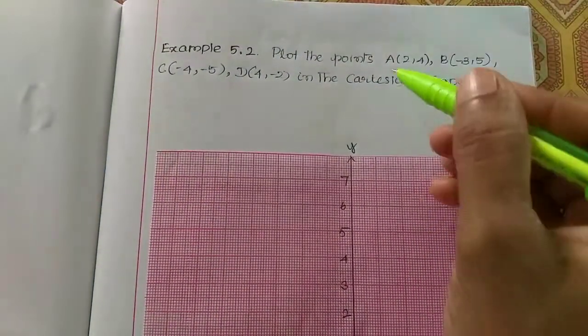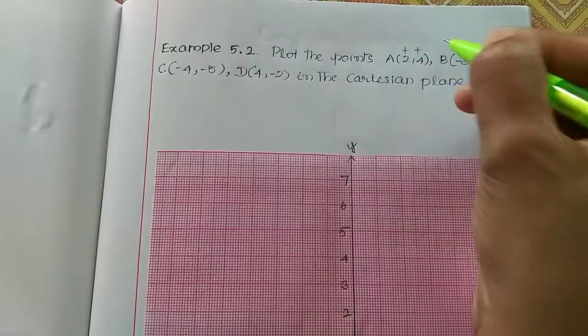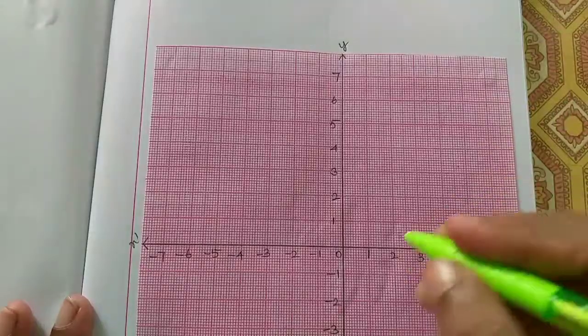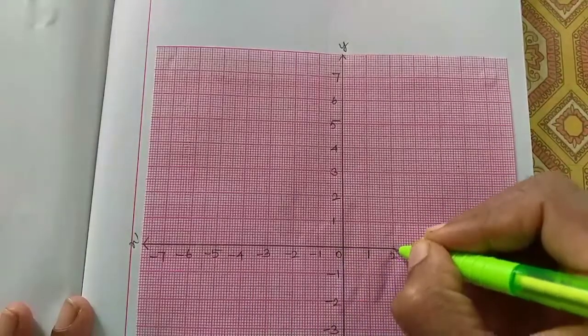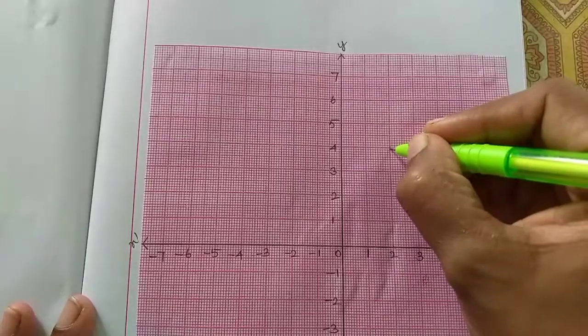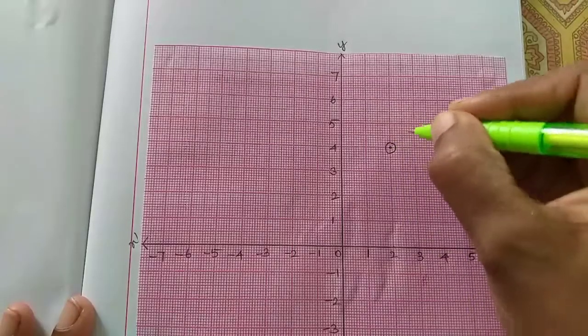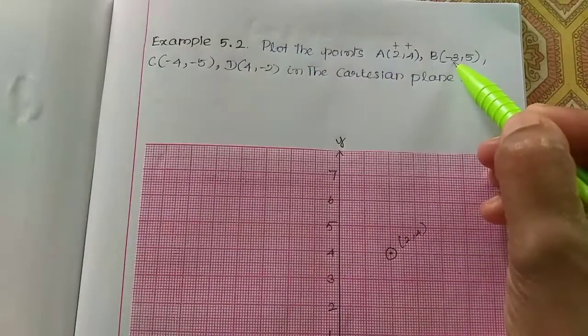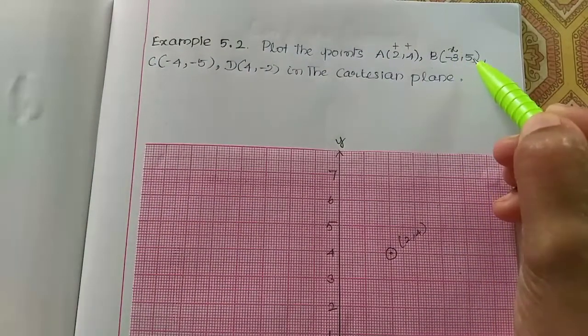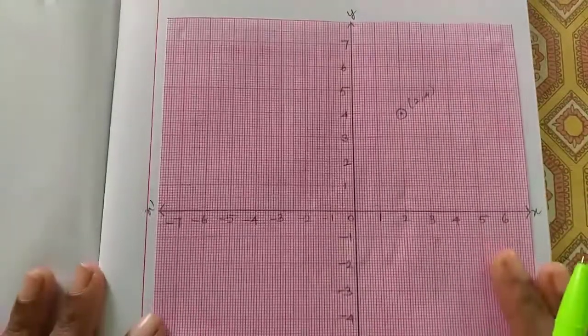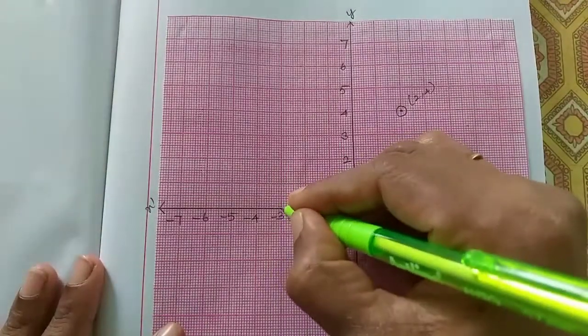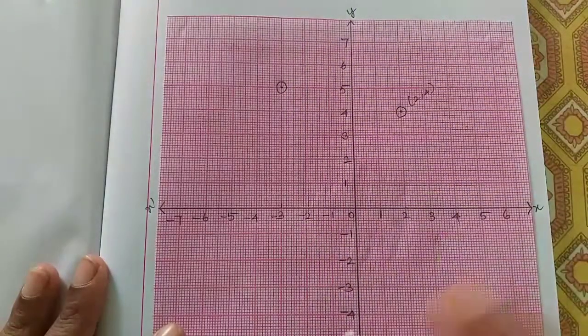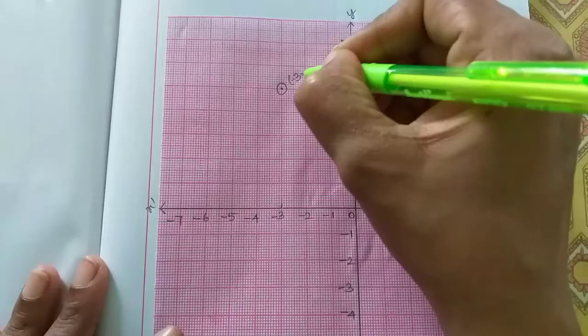Now, A is 2,4. Both are plus numbers, so it's in the first quadrant. On the x-axis is 2, y-axis is 4. This is y-axis 4. Next, B is -3,5.